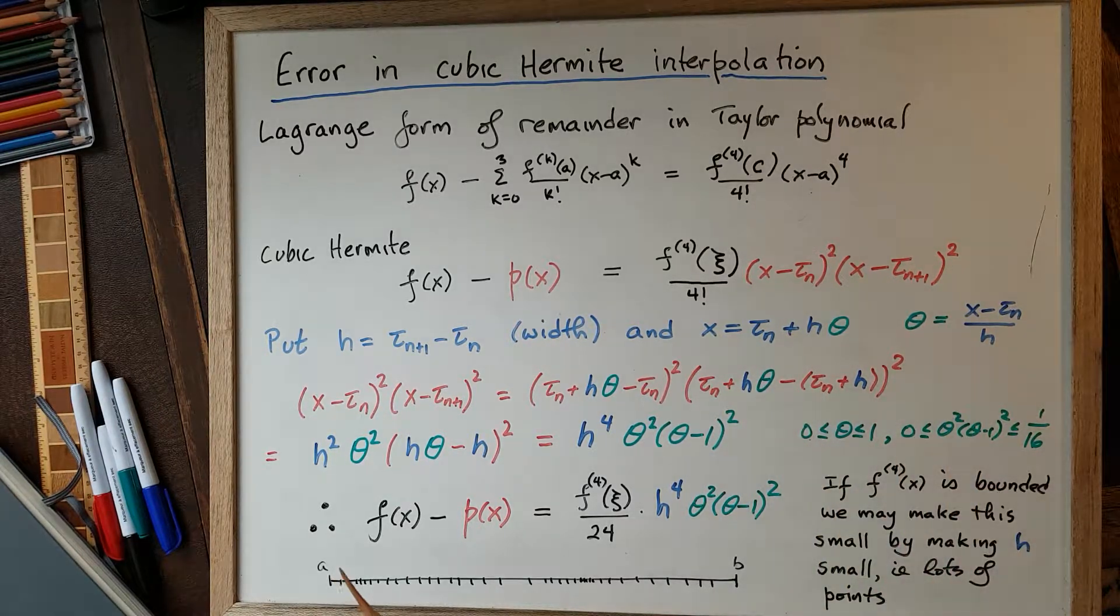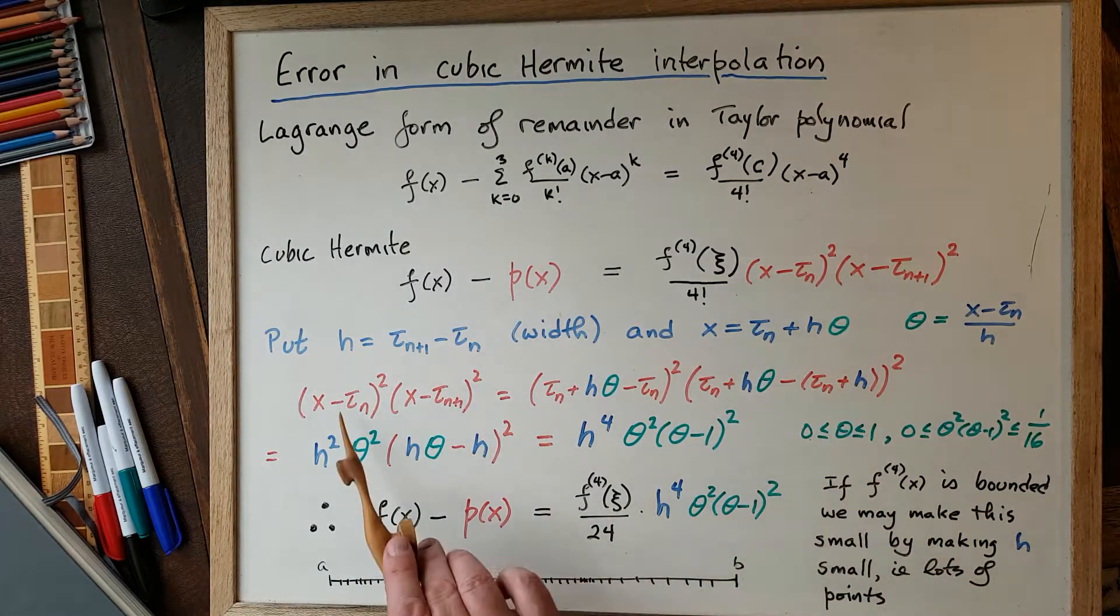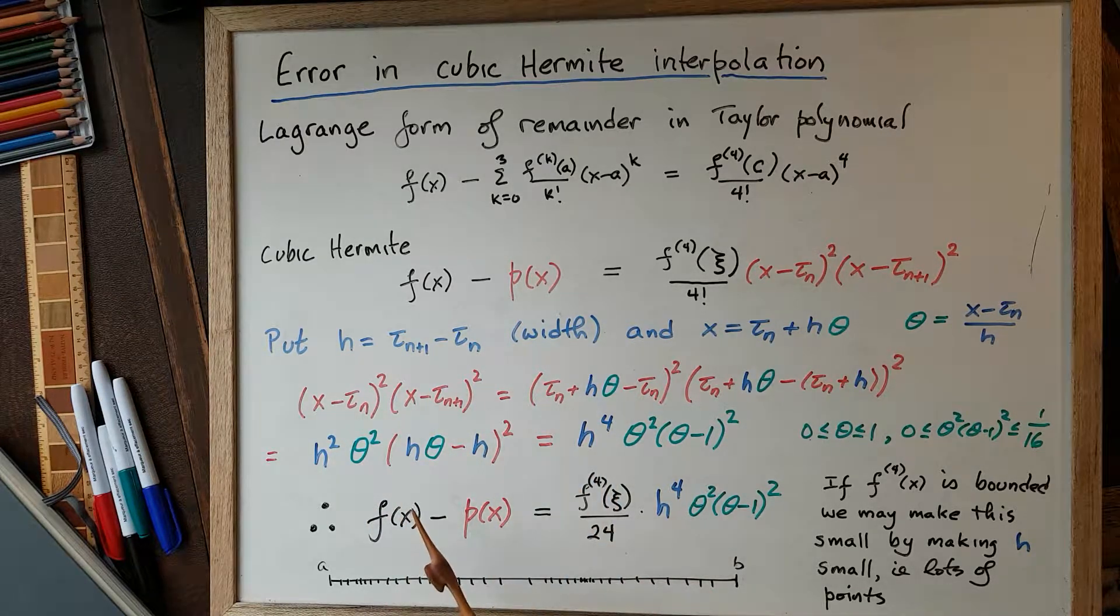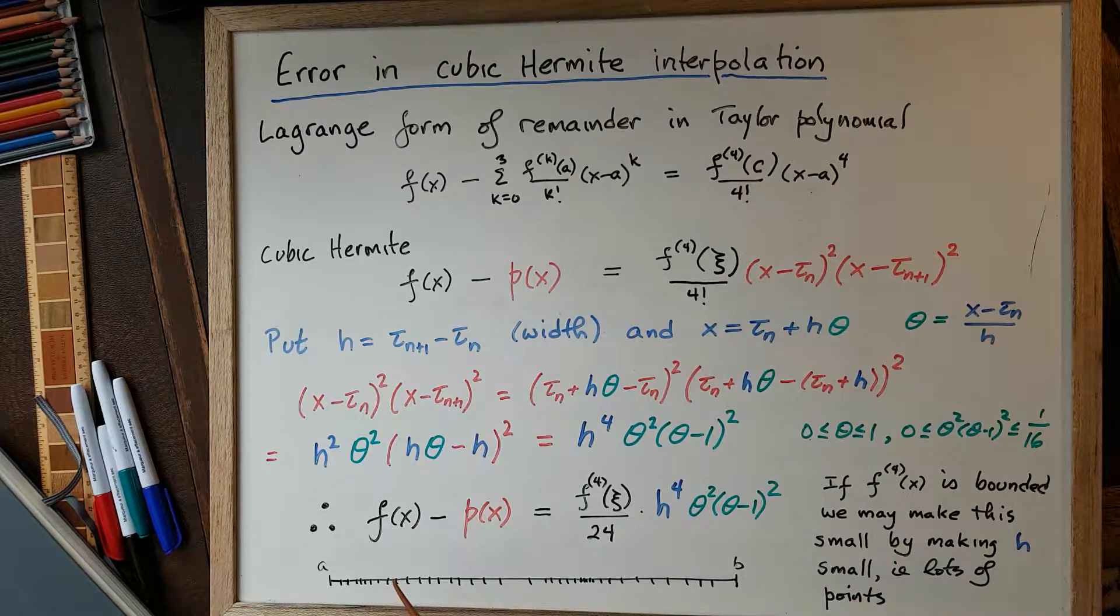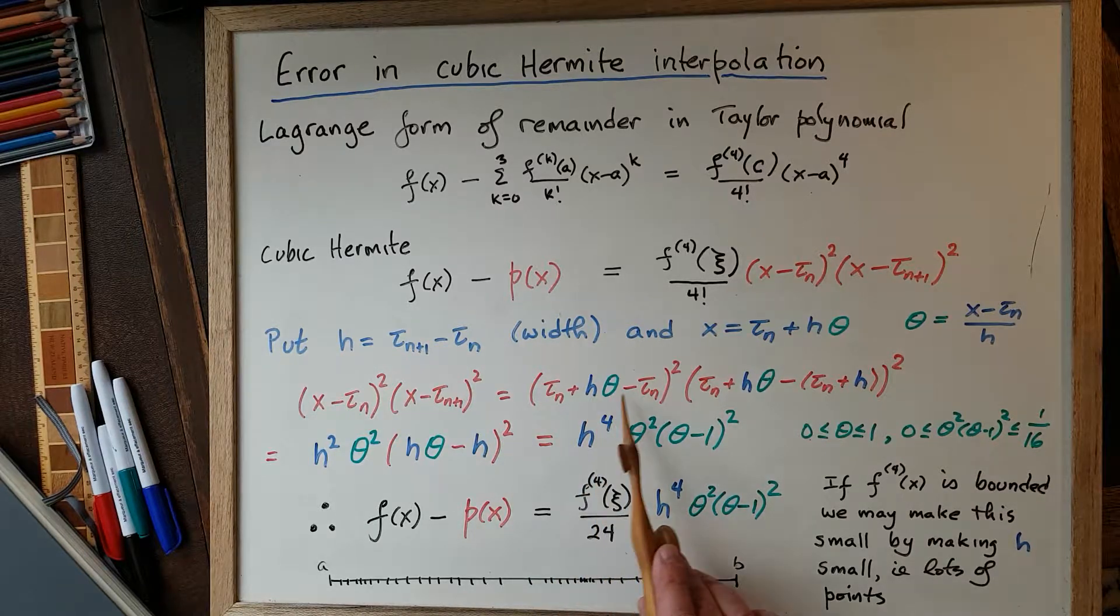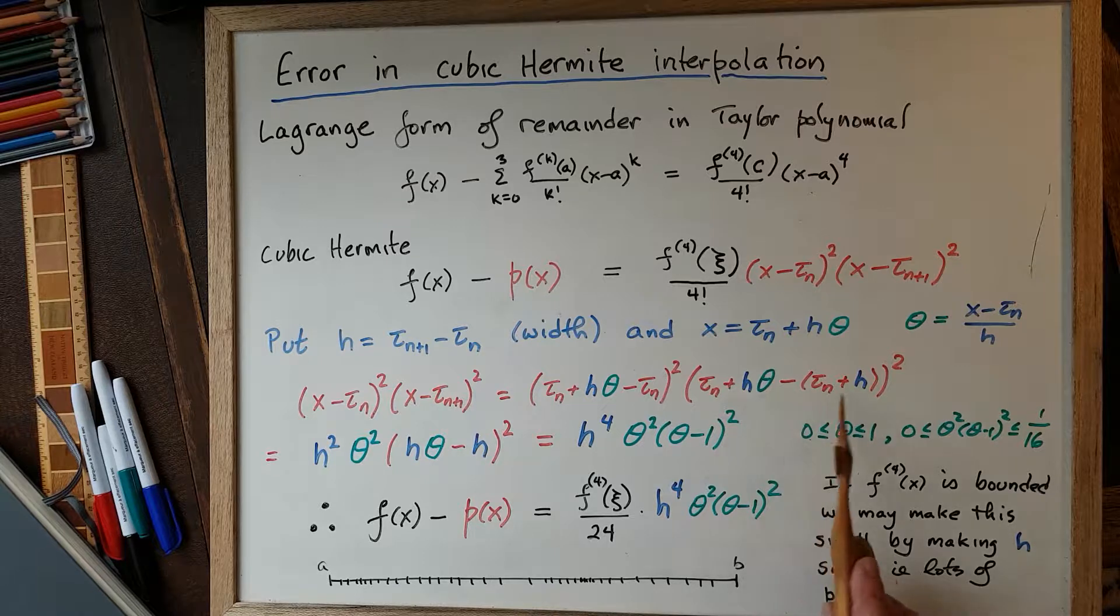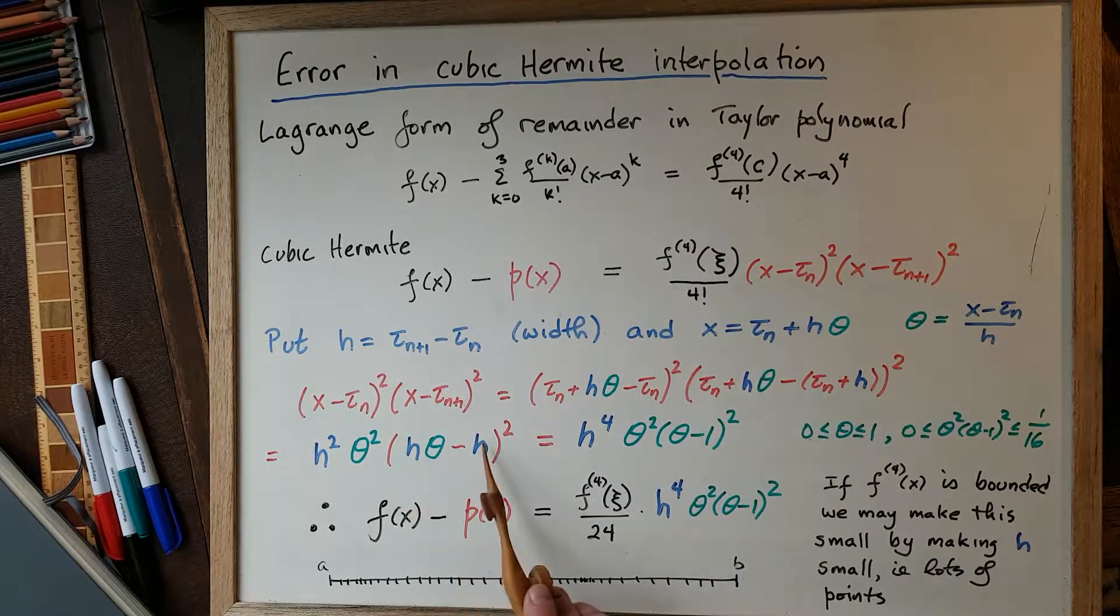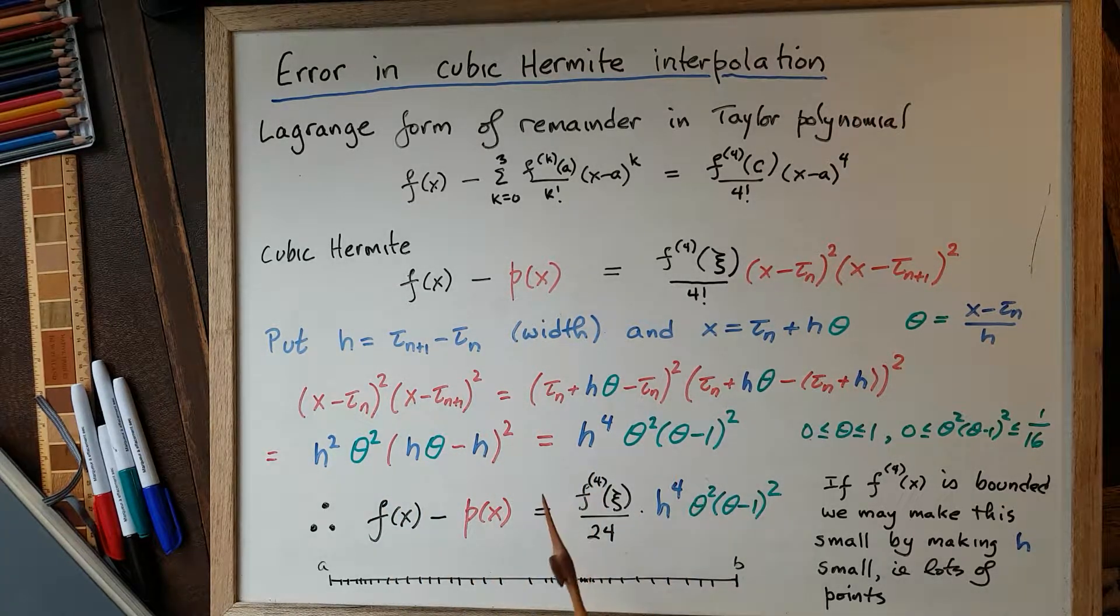So theta is (x - τ_n) / h. If we plug this in into the node polynomial, the x gets replaced by τ_n + hθ, and τ_{n+1} gets replaced by τ_n + h. And we simplify, so the τ_n's cancel, and we get hθ all squared, so h²θ², and we get h(θ - 1) all squared. So we can take a factor of h out of this. It's squared again, so we have h to the power of 4 times θ² times (θ - 1)².